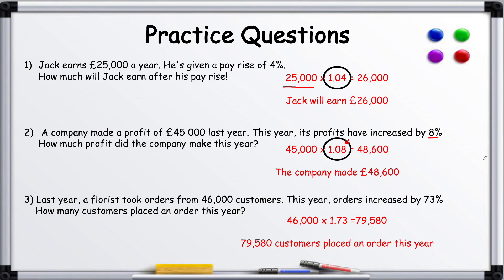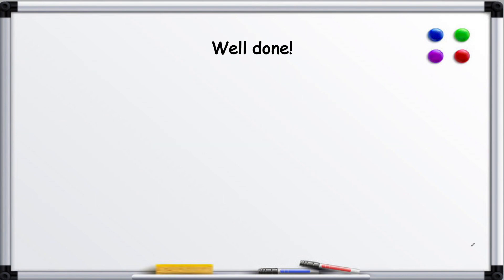Last year, a florist took orders from 46,000 customers. This year, orders increased by 73%. So you guessed it, we multiply 46,000 by 1.73—that's the increase—and we get 79,580. So 79,580 customers placed an order this year.